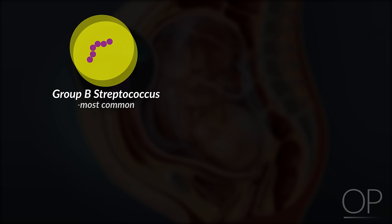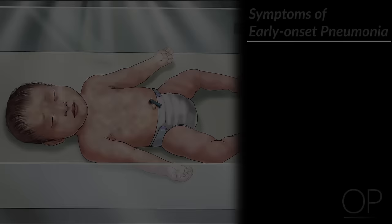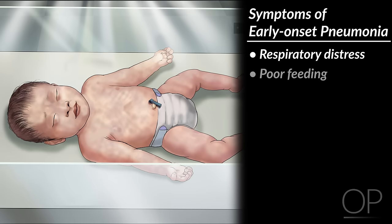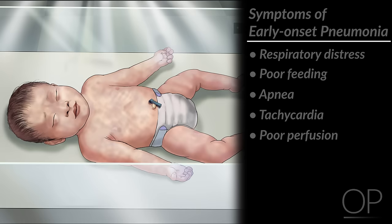Common pathogens of early onset pneumonia include group B strep, which is the most common, as well as E. coli, Klebsiella, and herpes simplex virus. Symptoms of early onset pneumonia include respiratory distress, poor feeding, apnea, tachycardia, and poor perfusion.